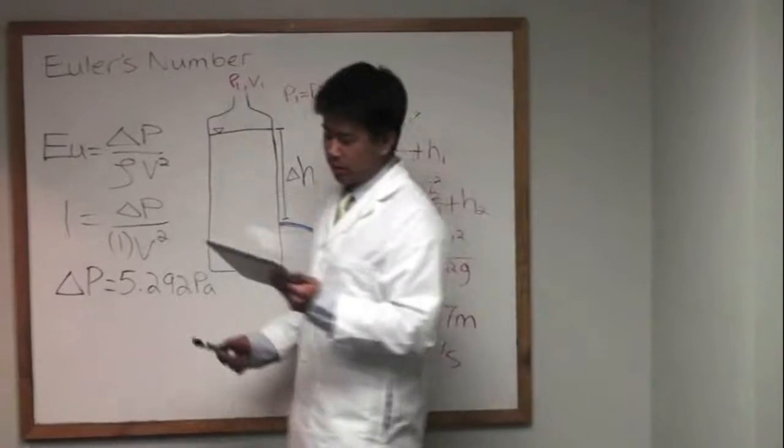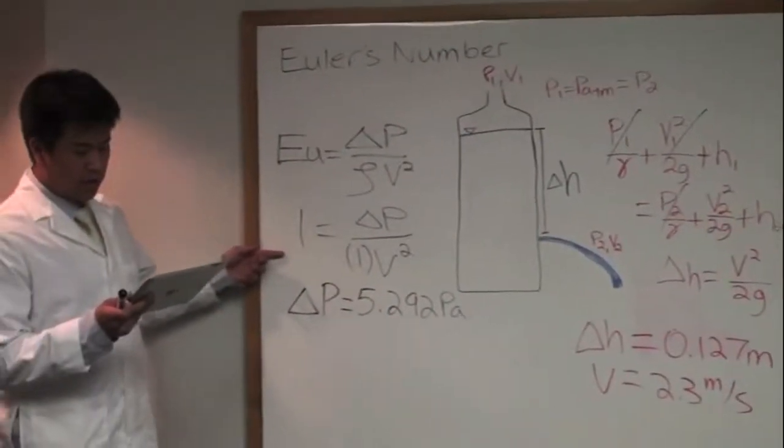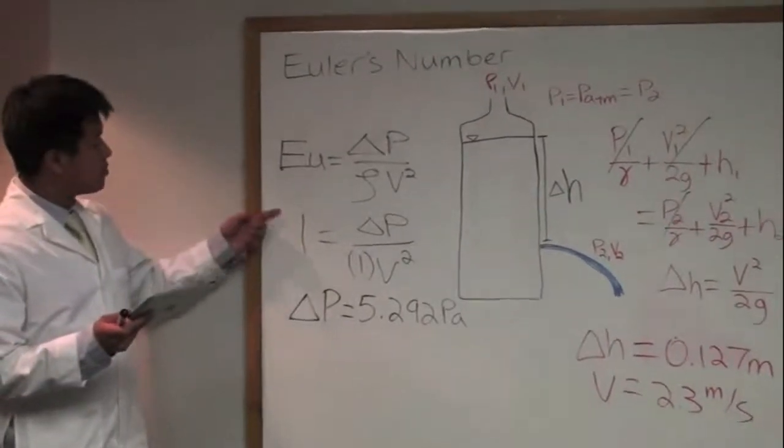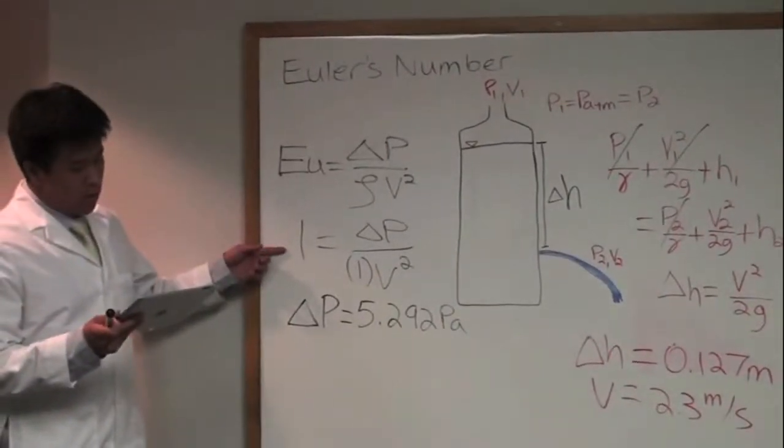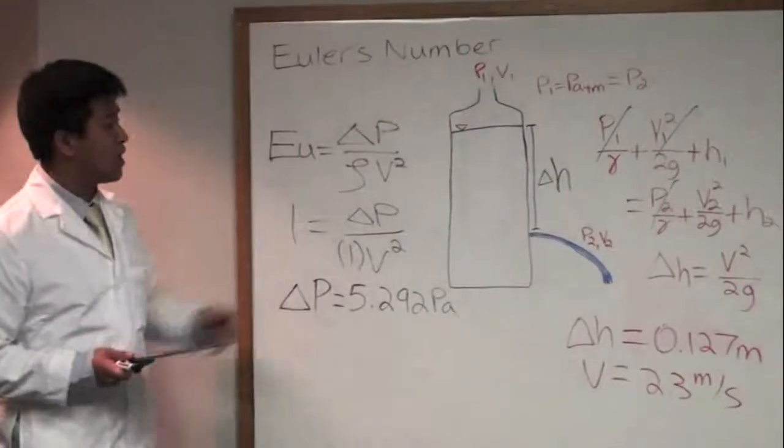we get velocity to equal 2.3 meters per second. Now using this velocity, we can use the equation for Euler's number to get delta P, which is the local pressure drop. Also, it is important to note that the Euler's number will be 1 because 1 is a perfect frictionless flow.